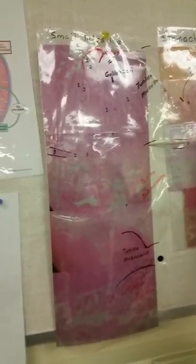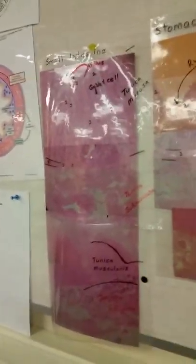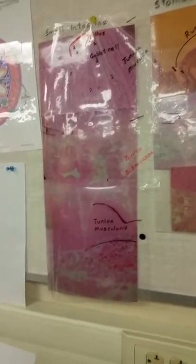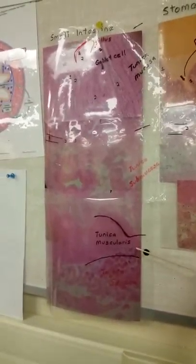And this layer here down — the tunica muscularis would be down here, up to this layer. The tunica serosa would be down here.